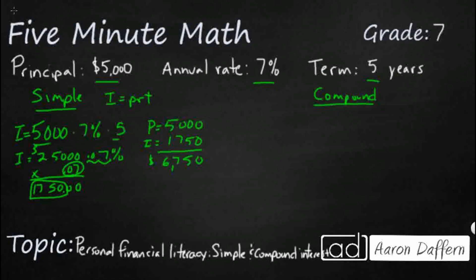Now, what does it look like if we calculate that on compound interest? Compound interest is sometimes called interest on interest, because with simple interest they're simply giving you interest on your principal — how much money you originally put in. As compound interest calculates, they give you interest not only on the principal but also on the interest.